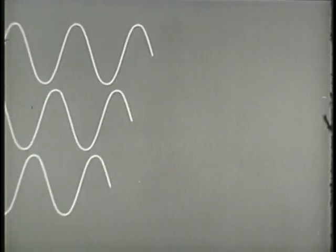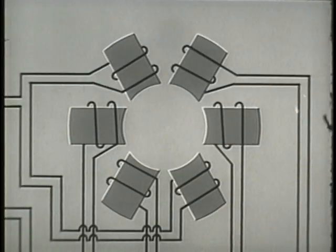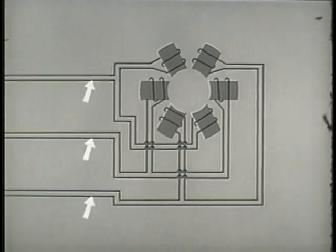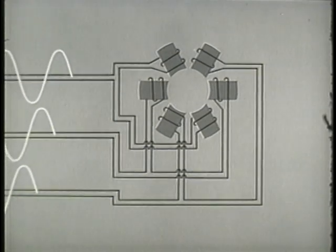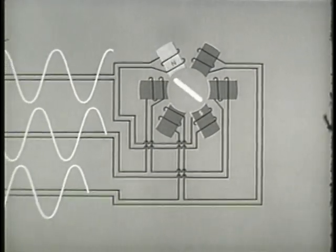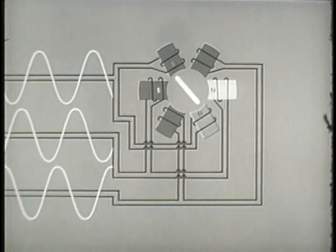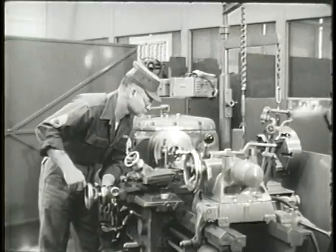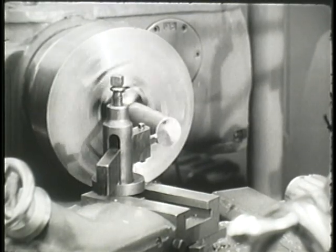We saw earlier how three voltages 120 degrees out of phase were generated. This voltage can be used to rotate the field electrically. Six magnets set in a circular arrangement represent the field of a three-phase induction motor. These three pairs of conductors, one pair for each AC phase, supply the field. Because of the time difference in the three phases, the poles will be energized in successive order, thus rotating the field electrically. Since the rotating field is cutting the rotor, it will rotate in the same direction as the rotating field but at a slightly slower speed.